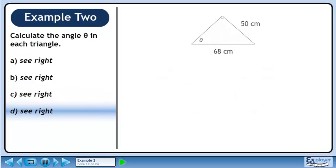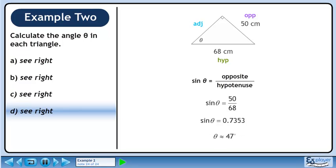Now we'll move on to part D. Label each side of the triangle. We know the opposite and hypotenuse, so let's use the sine ratio to get the unknown angle. The opposite side is 50 cm and the hypotenuse is 68 cm. Divide to get 0.7353. Use inverse sine to get the angle 47 degrees.